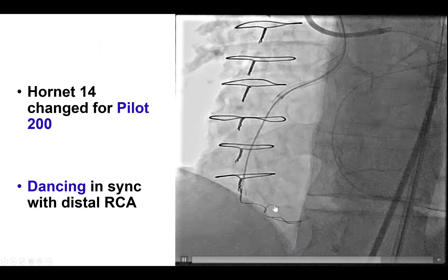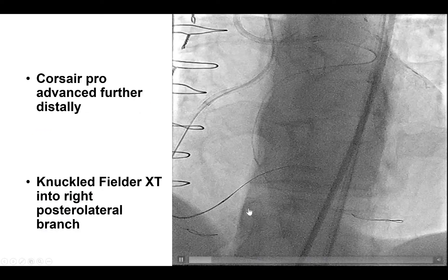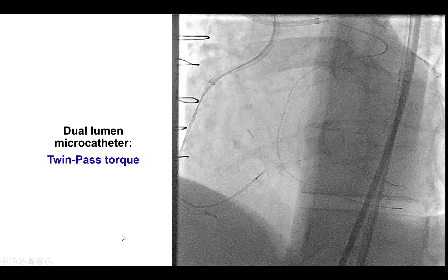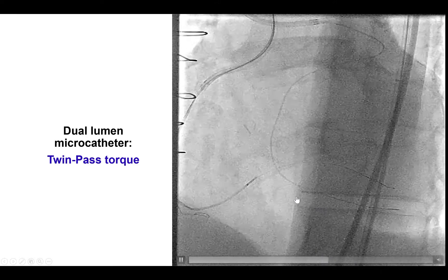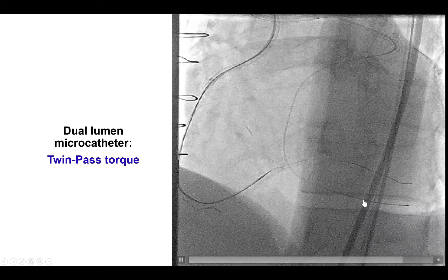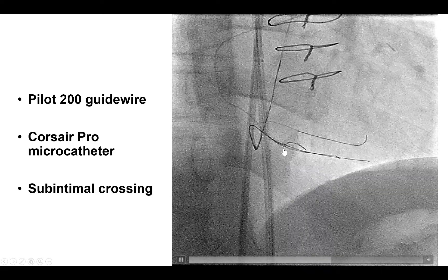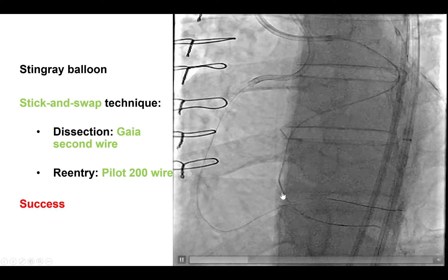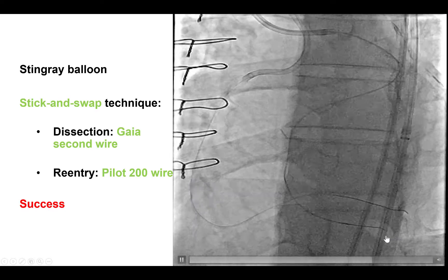We then changed to a Pilot 200, which now appeared to be moving in sync with the distal right coronary artery, suggesting we were moving in the right direction. We removed the Pilot, knuckled the guide wire hoping it would go to the right posterolateral, but unfortunately it went into a different branch. We then used a dual-lumen microcatheter, and were able to advance a different guide wire that this time did take the correct course and went into the right posterolateral, which was being marked by the retrograde guide wire. The dual-lumen microcatheter was key for these maneuvers. We then did re-entry using the Stingray balloon, using the stick-and-swap technique with a Gaia 2nd to stick and a Pilot 200 to swap. Re-entry was facilitated by having an excellent marker of where the true lumen was from the retrograde guide wire, and we were able to successfully re-enter into the distal true lumen.